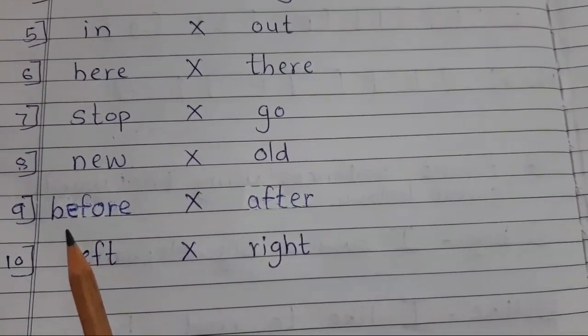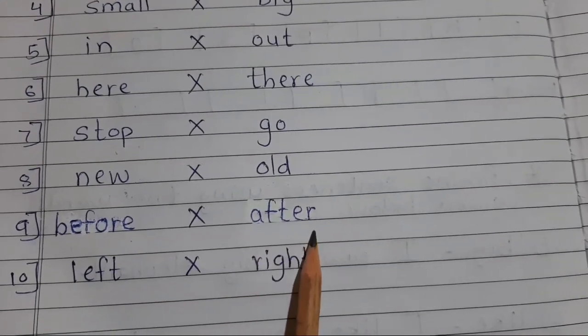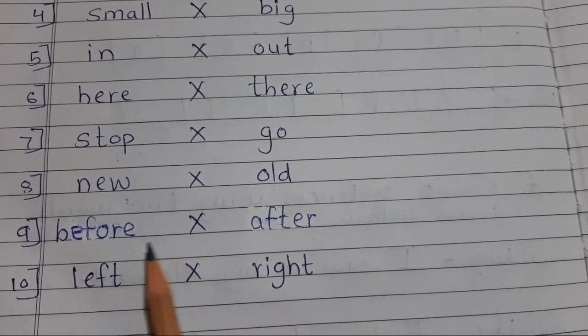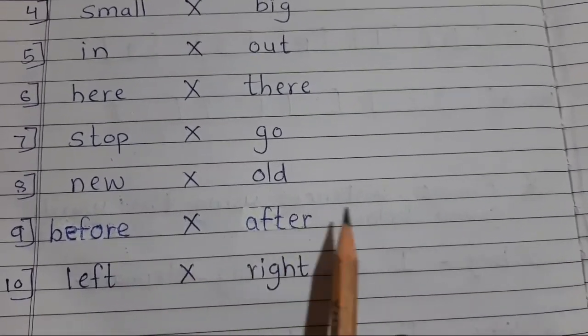Number nine. B-E-F-O-R-E before. Opposite A-F-T-E-R after. Before means pehle. After means baad me. Pehle, baad me.